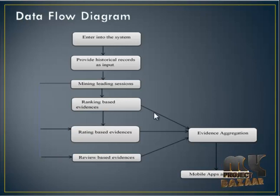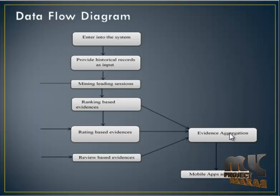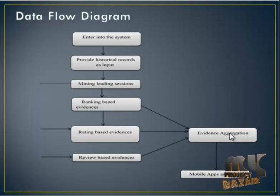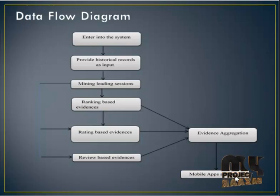This process goes to evidence aggregation. Based on the evidence, we aggregate, distribute the data, and identify the evidence — meaning we extract our information. This then goes to the mobile apps as the output — the basic output of our process.